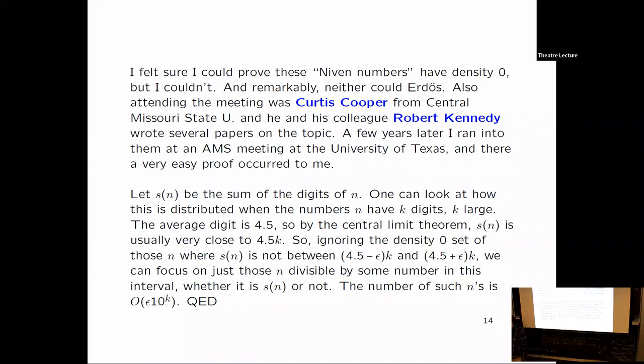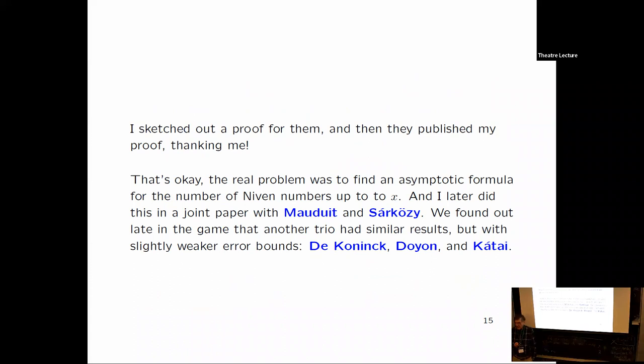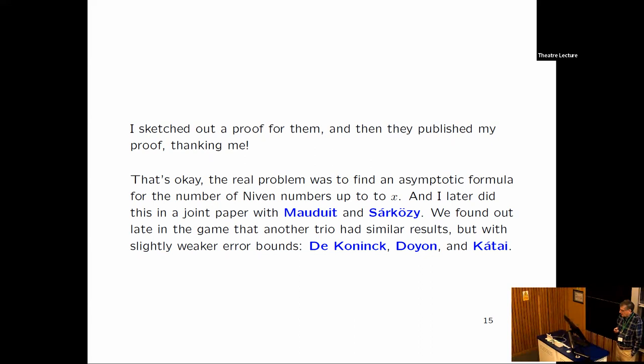So I told this proof to Cooper and Kennedy and they ended up publishing it thanking me. But that's okay because the bigger issue was what is the asymptotic density? Now it should be some constant times x over log x because the sum of the digits of a number near x should be near log x. And so the chance that it should divide should be like constant over log x. And so this I later proved in a joint paper with Maudui-Shparlinski. And it turned out that another trio proved the same theorem with a slightly weaker error bound. This is De Koninck-Doyon-Kátai. That's it for Niven numbers. These papers also generalize to other bases.